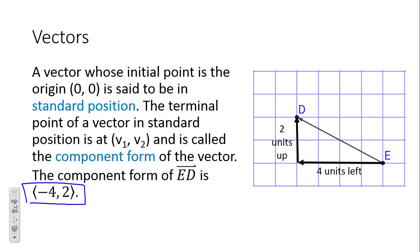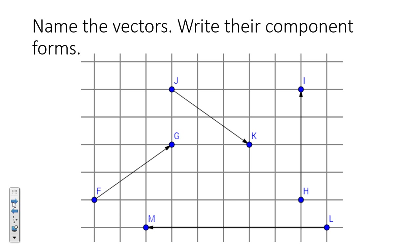So far so good? The next slide has a bunch of vectors — not in standard position — but I want you to find what the component form would be if we translated them all so that the initial point was at the origin. Left is negative, right is positive, down is negative, up is positive.